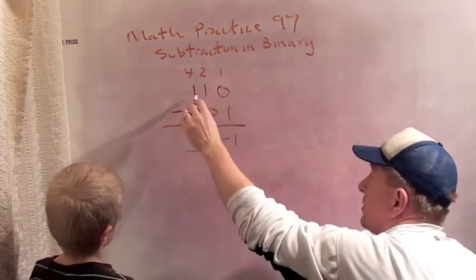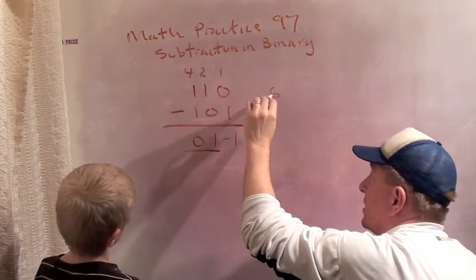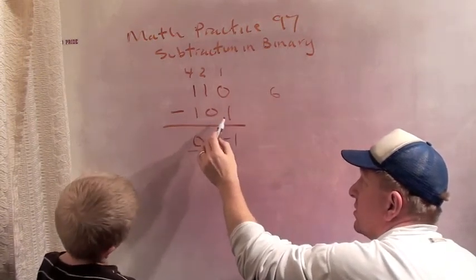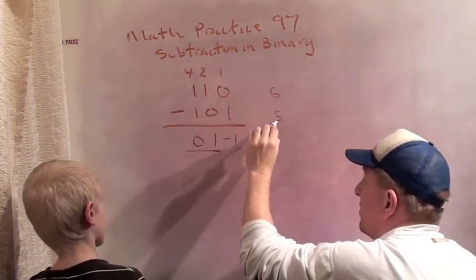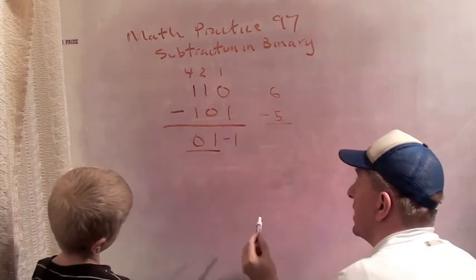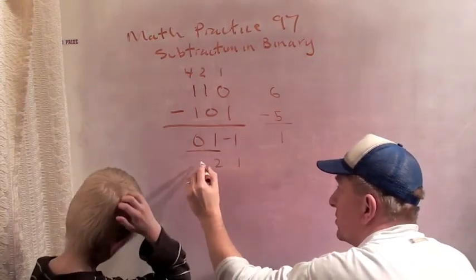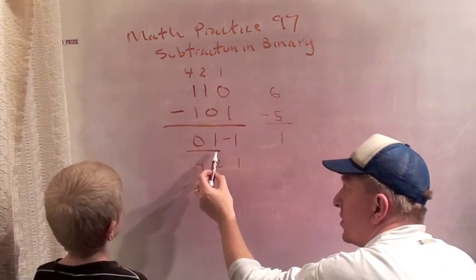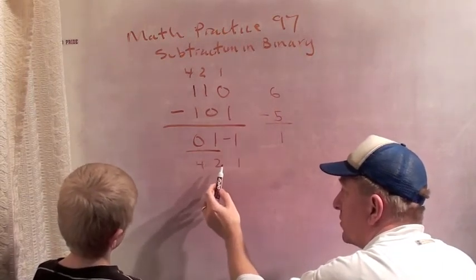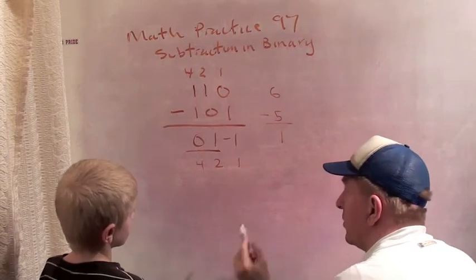But first, let's see. This was six, four plus two. This was 101 was four plus one, which was five. So six minus five, we're hoping we get the answer one. This is the ones digit, the twos digit, and the fours digit. What is 12 minus 11? In other words, two minus one, which is one.